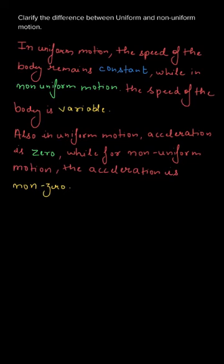In non-uniform motion, the acceleration may or may not be zero, because the speed is variable. If the velocity is also variable, then the acceleration is non-zero. To summarize: first, in uniform motion speed remains constant while in non-uniform motion it is variable; second, in uniform motion acceleration must be zero, while for non-uniform motion acceleration is not necessarily zero — it may be non-zero.